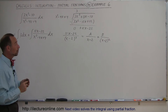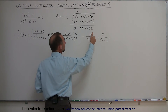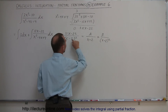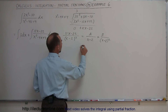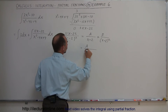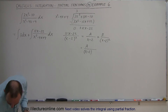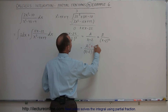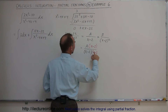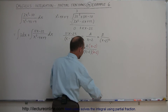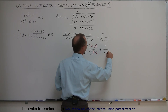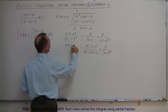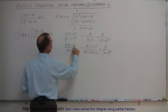Now we have to find what A and B are equal to. We multiply both the numerator and denominator as needed to get the same denominator. This already has the same denominator, so only the first term needs to be multiplied. So this is going to equal A divided by x minus 2, multiplied by x minus 2 over x minus 2, plus B over x minus 2 quantity squared, and that equals 12x minus 22 divided by x minus 2 quantity squared.